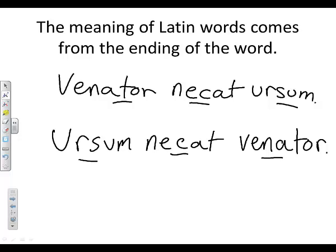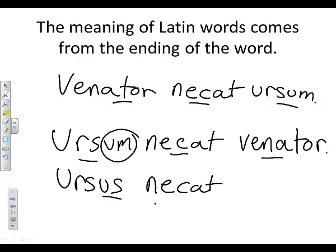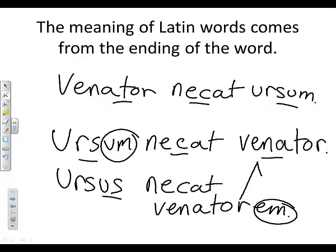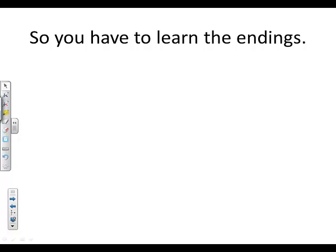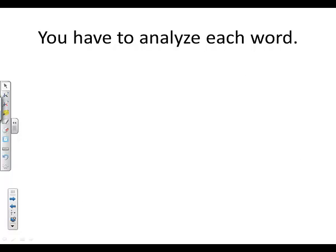The way you change the meaning depends on these endings. 'Ursus' — that's the nominative — if we have a sentence with 'ursus,' then it's the bear doing something. If you say 'ursus necat venatorem,' now this is the one receiving the action, so now it's the bear kills the hunter. That's how you tell what a Latin sentence means. You have to learn the endings and analyze each word to figure out what it's doing in the sentence.